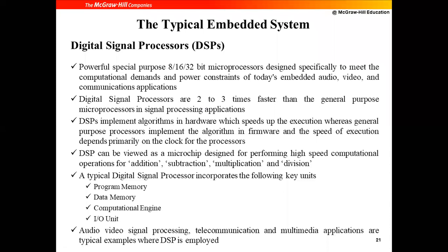In contrast, microprocessors and microcontrollers have algorithms implemented in firmware. Because of this difference, the execution speed of DSP processors is faster than microprocessors. When you require processing of signals — audio signals, images, or video — where lots of computations are required, such as image processing algorithms, audio processing, or video processing algorithms requiring a lot of mathematical computations, we go for DSP processors.